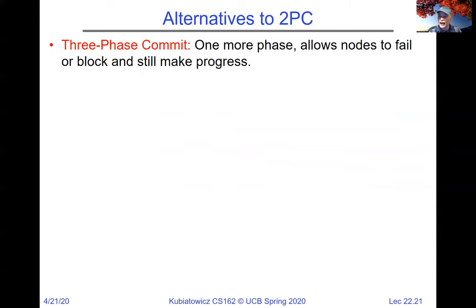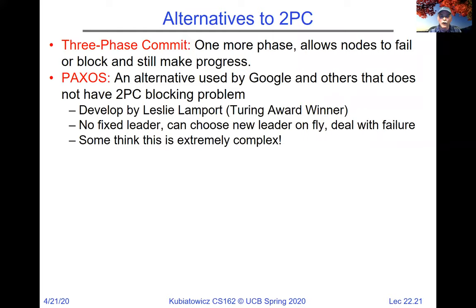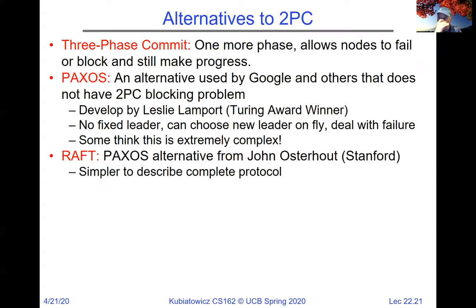There are interesting alternatives to two-phase commit. Three-phase commit adds one more phase and allows nodes to fail or block — it's more of a majority voting scenario. Paxos is a very popular example used by Google and others; it does not have the two-phase commit blocking problem. It was developed by Leslie Lamport, has no fixed leader, and can choose a new leader on the fly. Raft is a variant developed at Stanford, claimed to be much easier to understand and implement correctly than Paxos.